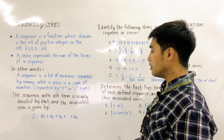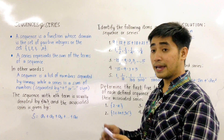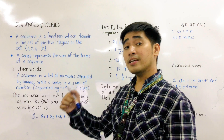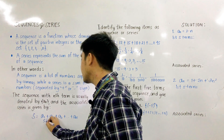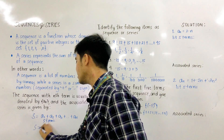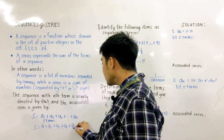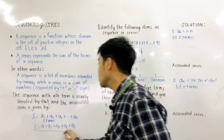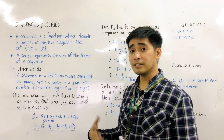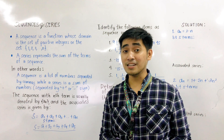The sequence with N-th term is usually denoted by A-N. The associated series is given by S = A1 + A2 + A3 + ... + AN. So when we say associated series, if we have 5 terms, therefore S = A1 + A2 + A3 + A4 + A5. We will not simplify the associated series further, because in series it should be separated by plus or minus.